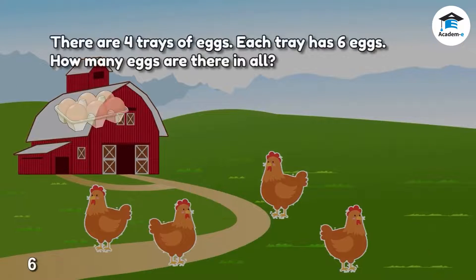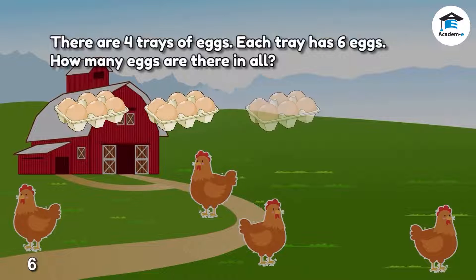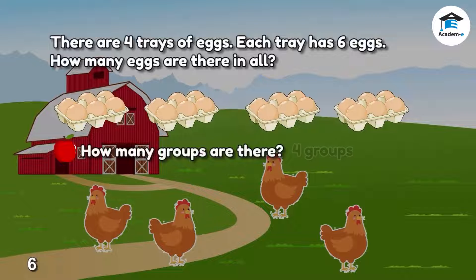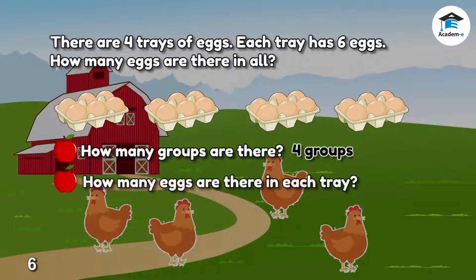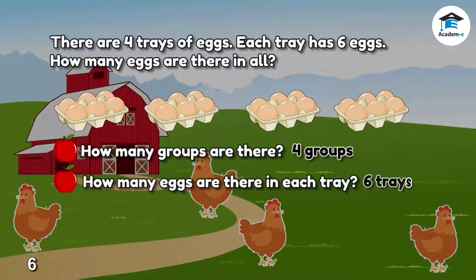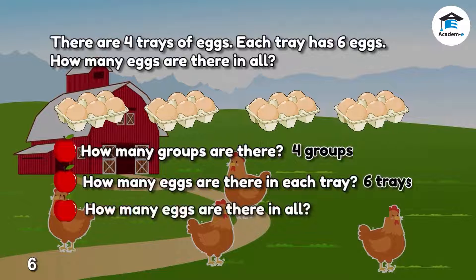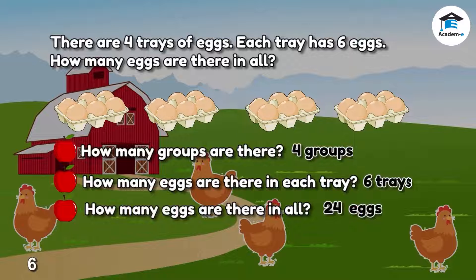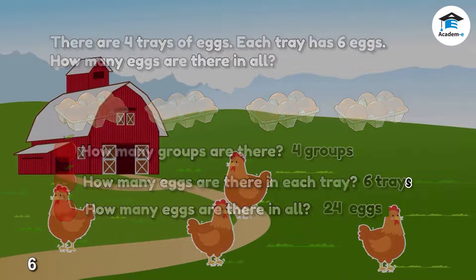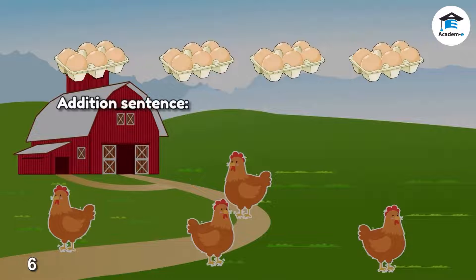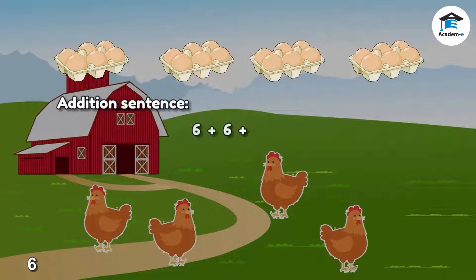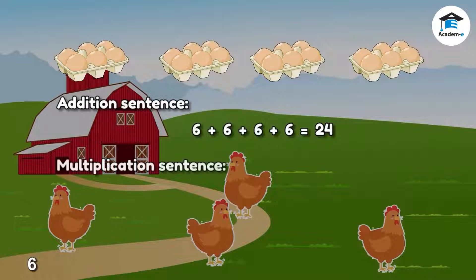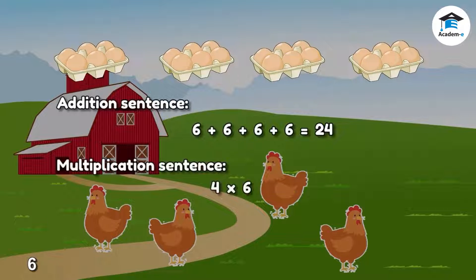There are 4 trays of eggs. Each tray has 6 eggs. How many eggs are there in all? How many groups are there? There are 4 groups. How many eggs are there in each tray? There are 6 eggs in each tray. How many eggs are there in all? There are 24 eggs in all. In addition sentence, it is 6 plus 6 plus 6 plus 6 equals 24. In multiplication sentence, it is 4 times 6 equals 24.